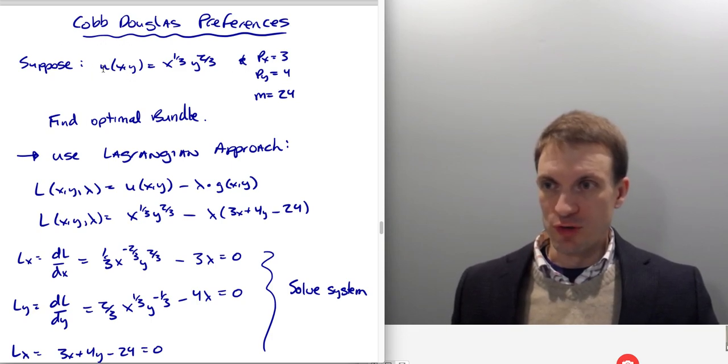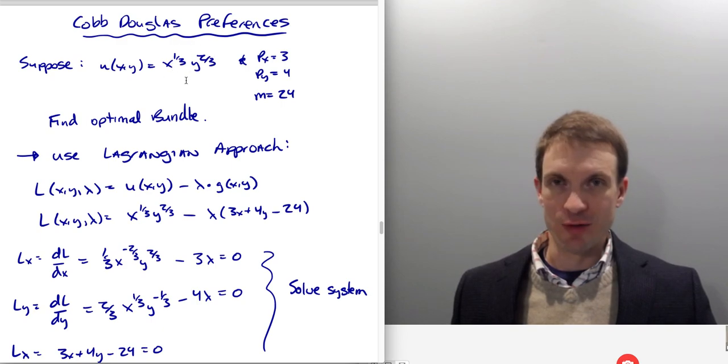So suppose the consumer's utility from good X and good Y is coming from the following preference structure. The utility function: X to the 1/3 times Y to the 2/3. Price of good X is three, price of good Y is four, and income is 24. So my budget constraint is 3X plus 4Y equals 24. I'm gonna find the optimal bundle.